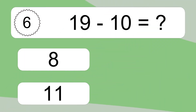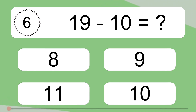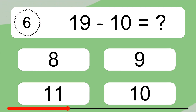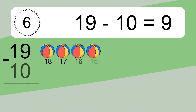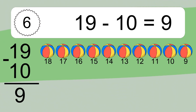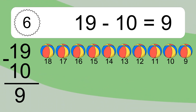19 minus 10 equals what? 19 minus 10 equals 9. Let's count it. 18, 17, 16, 15, 14, 13, 12, 11, 10, 9.